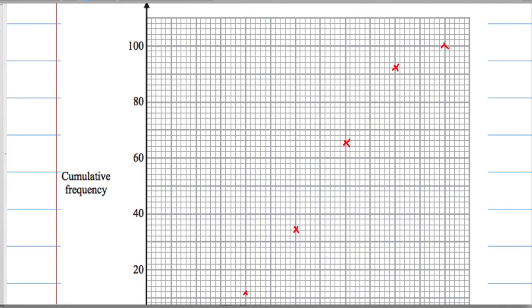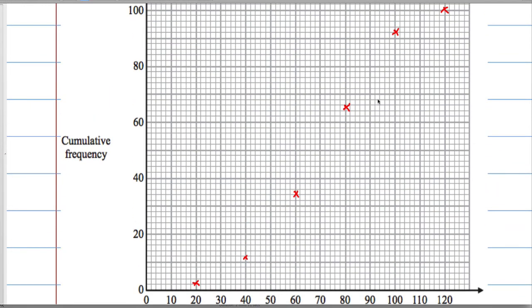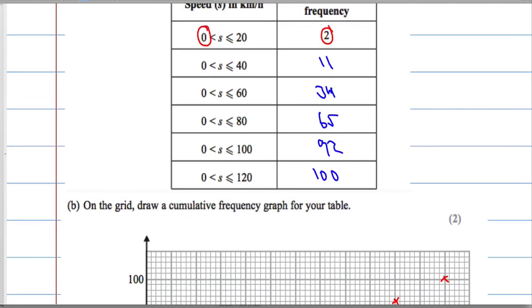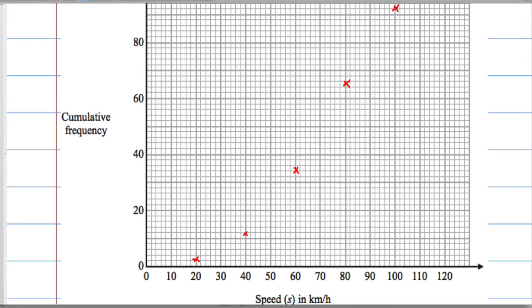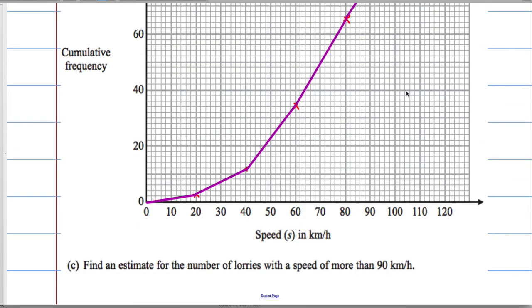Now you can draw this freehand as an elongated S. I like to do it using a ruler, drawing straight lines. Notice that the graph must start from 0 in this case because the very bottom speed was 0. We just connect up the dots, joining them all up, and that's your cumulative frequency diagram.